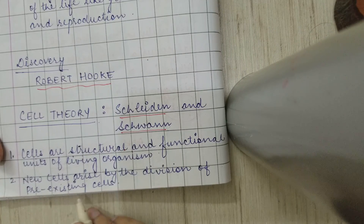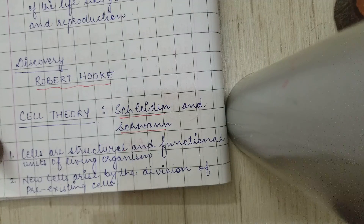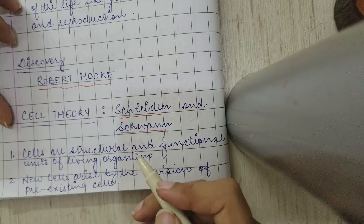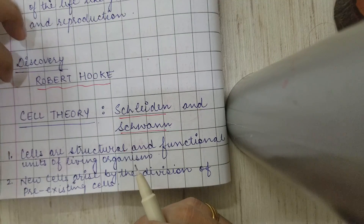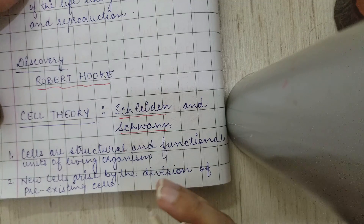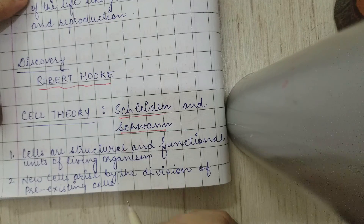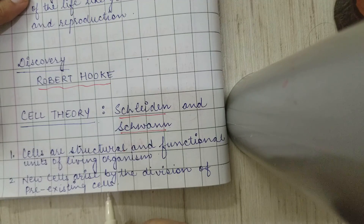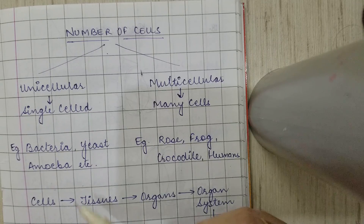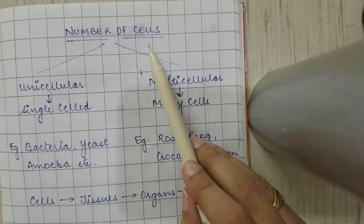The second postulate is that new cells arise by the division of pre-existing cells. This means that pre-existing cells, which are already present, give rise to new cells. For example, in our body, skin cells are shed off every day, and new cells arise in the place of those shed cells — they arise from pre-existing cells only.